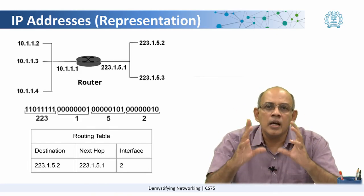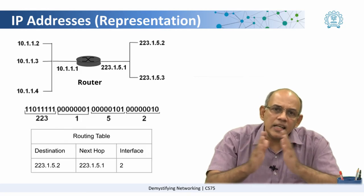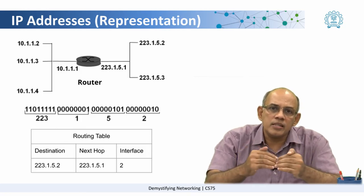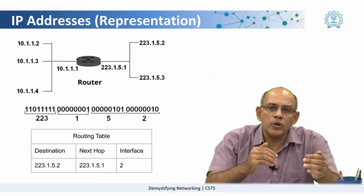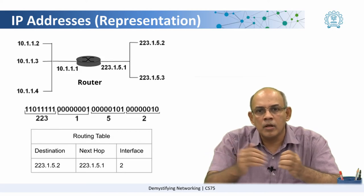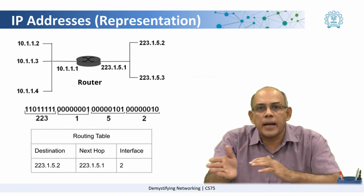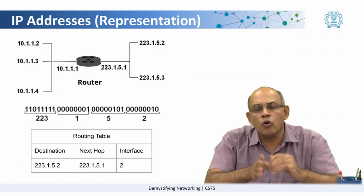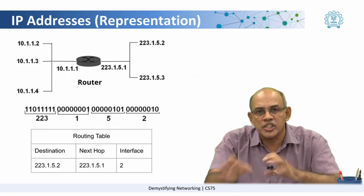This is a very conceptual level of explanation. Essentially the routing table is simply mapping the input link, the input IP address to the corresponding output IP address and the output link. The router knows which is the link on which to send the packet or forward the packet so that it goes towards the 223.1.5.2 machine.